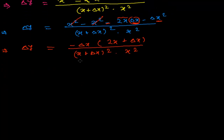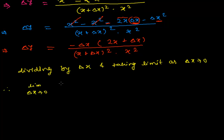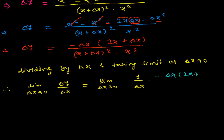Now, we need to divide by delta x and take the limit as delta x tends to 0. So, dividing by delta x and taking the limit: limit as delta x tends to 0 of delta y over delta x equals limit as delta x tends to 0 of minus delta x times (2x plus delta x) over (x plus delta x) squared times x squared, divided by delta x. Delta x and delta x cancel out.